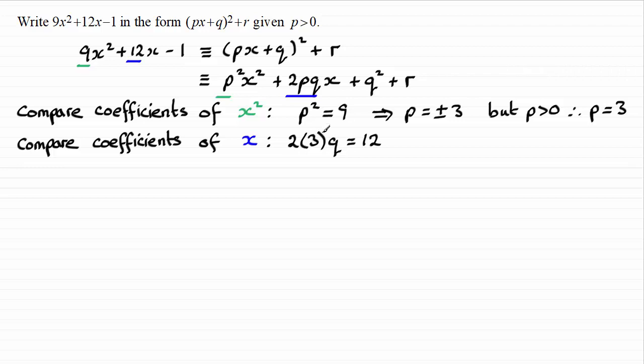Well, we've got here 6q equals 12. And so therefore, q must be equal to 12 divided by 6. And clearly, that's going to be equal to 2. So we've now got p and q.